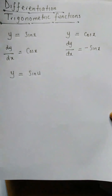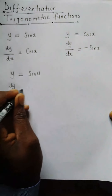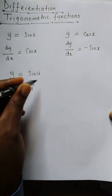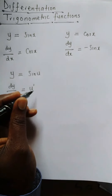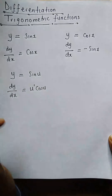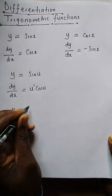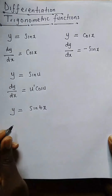What if you're given something like y = sin(u), where u is a function of x? We find the derivative of sin(u) using the chain rule: dy/dx equals the derivative of u, which is u', then multiplied by cos(u).